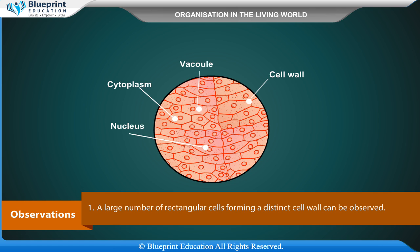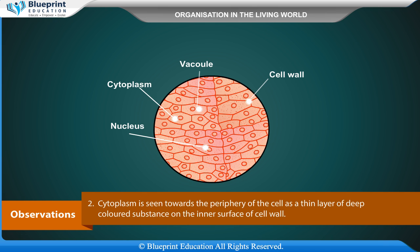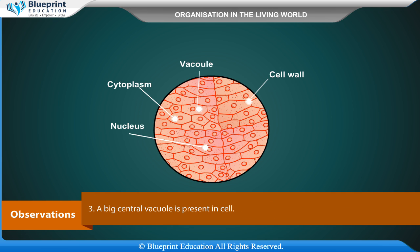Observations: A large number of rectangular cells forming a distinct cell wall can be observed. Cytoplasm is seen towards the periphery of the cell as a thin layer of deep colored substance on the inner surface of the cell wall. A big central vacuole is present in each cell.